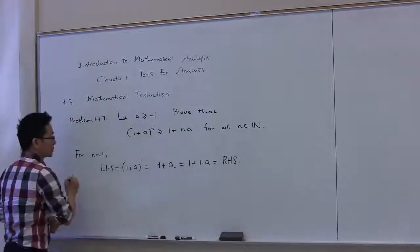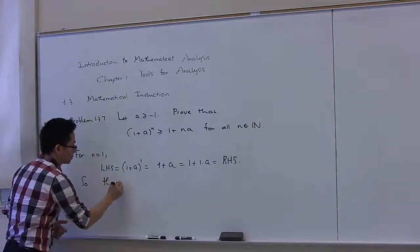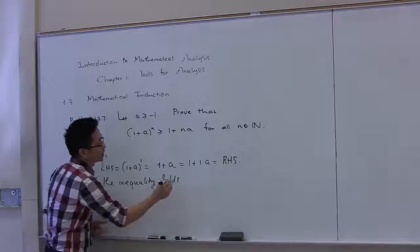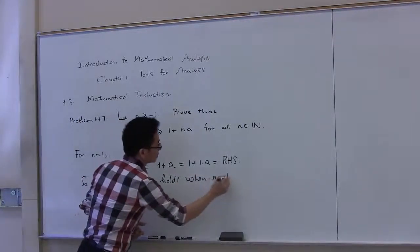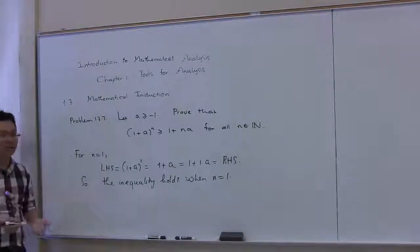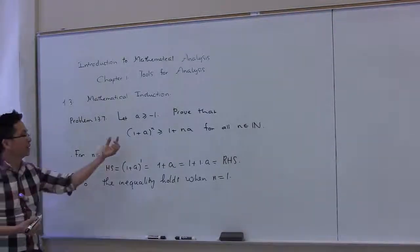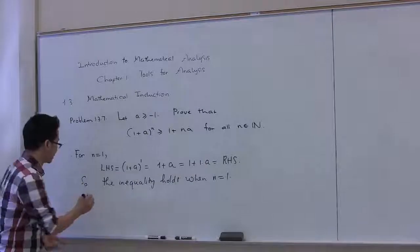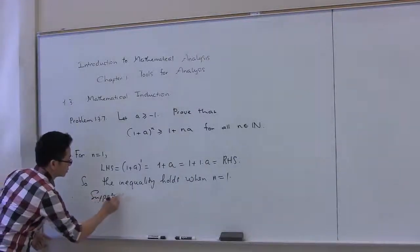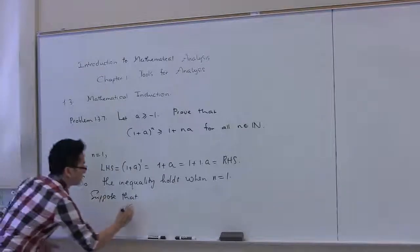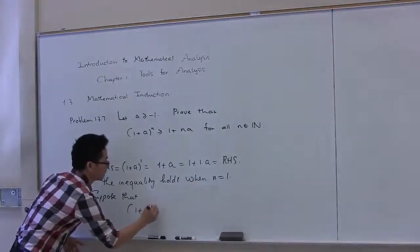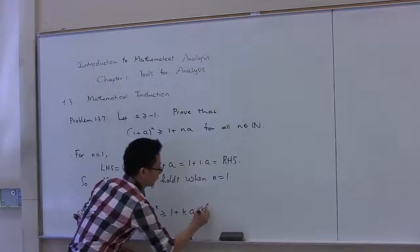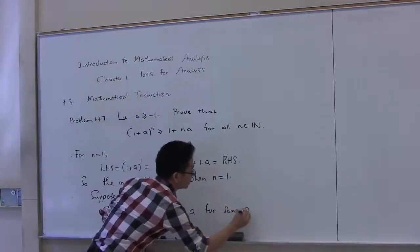So the inequality holds when n is equal to 1. Now let's move to the inductive step. In the inductive step, we suppose that the inequality is satisfied when n is equal to k for some positive integer k. That is, suppose that (1+a)^k is greater than or equal to 1 plus k times a for some positive integer k.